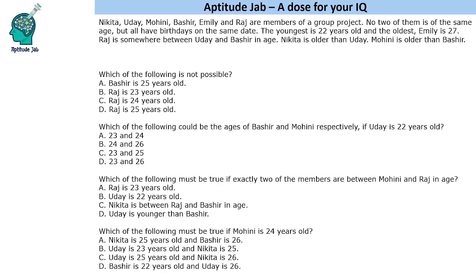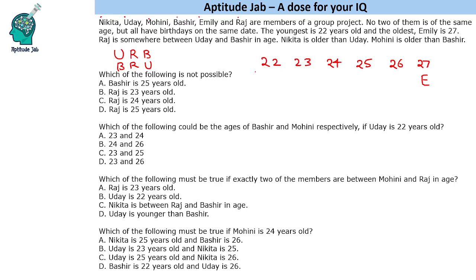Let us write these numbers and the conditions. There can be multiple possibilities — we do not have to make all of them. Emily is 27 and I've taken letters N, U, M, B, E, R to represent the names. Raj is between Udaya and Bashir, so Raj cannot be the youngest person — that should directly strike your mind. Nikita is older than Udaya.